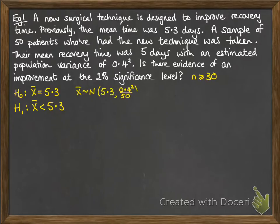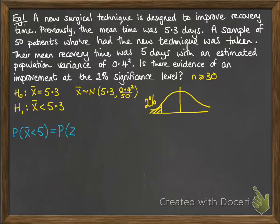If our null hypothesis is true, we have this distribution. The mean follows a normal distribution with those parameters, and we're looking for a less than value, so with our 2% level of significance, we work out the probability that x̄ is less than 5. Since 5 is our test statistic, we're told in the question that the new mean recovery time was 5 days.